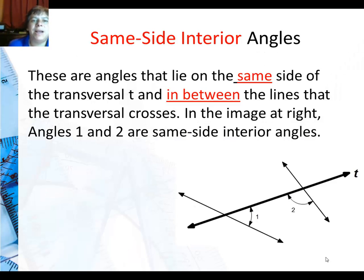Let me look at same-side interior first. Those are angles that are on the same side of the transversal. Think of that first word as which side of the transversal we're on, and in between the lines. So interior means right here in between these two lines that the transversal is crossing.